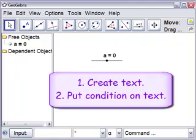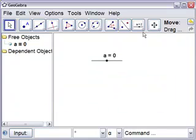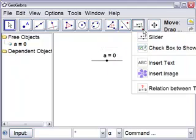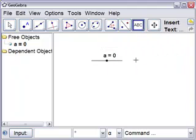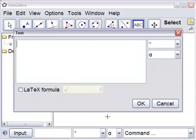So we're going to now create a text and then we're going to put a condition on this text that it only shows up when a equals zero. So let's go and insert text. We'll put it up here and it says, yes, a equals zero. This is our text.